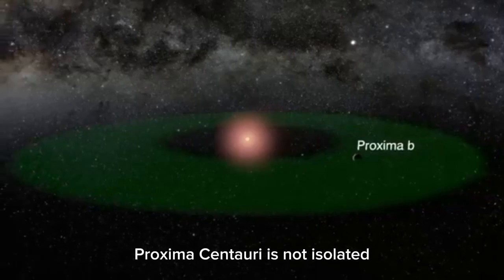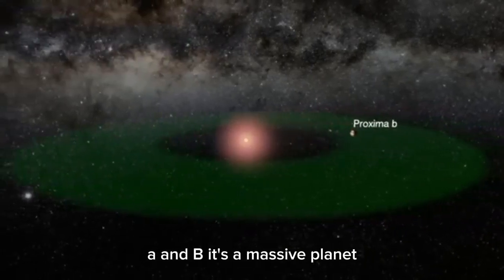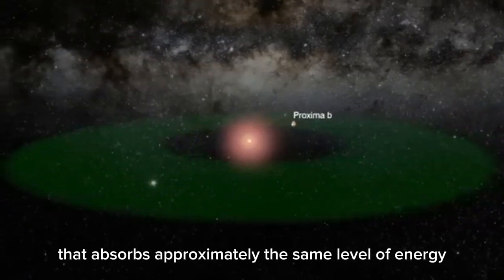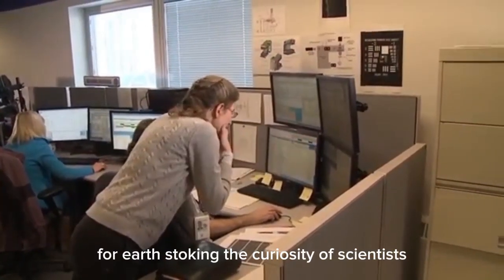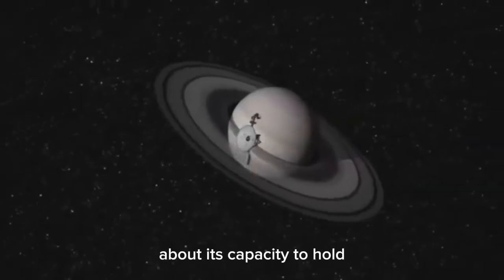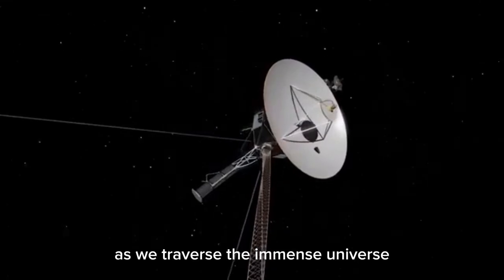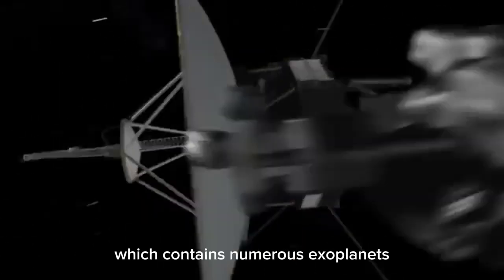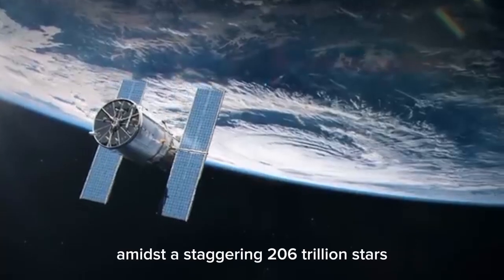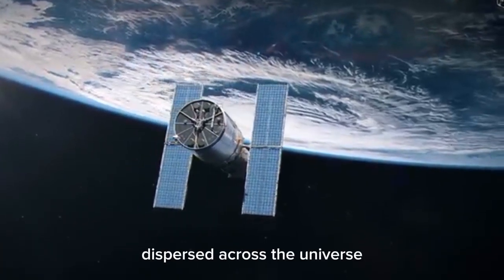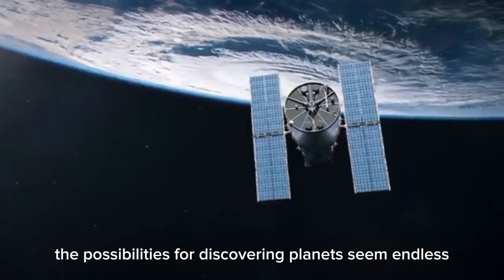Proxima Centauri is not isolated. It shares an orbital system with Proxima Centauri A and B. It's a massive planet that absorbs approximately the same level of energy from its star as the Sun does for Earth, stoking the curiosity of scientists about its capacity to hold or sustain water and life as we traverse the immense universe, which contains numerous exoplanets orbiting stars beyond our Sun.